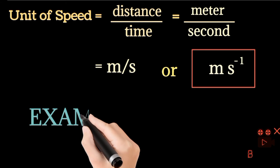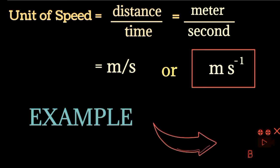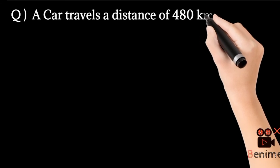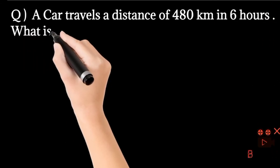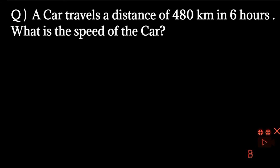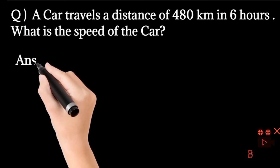Now, let us take an example. Let us try to understand the speed of a car. A car travels a distance of 480 km in 6 hours. What is the speed of the car?